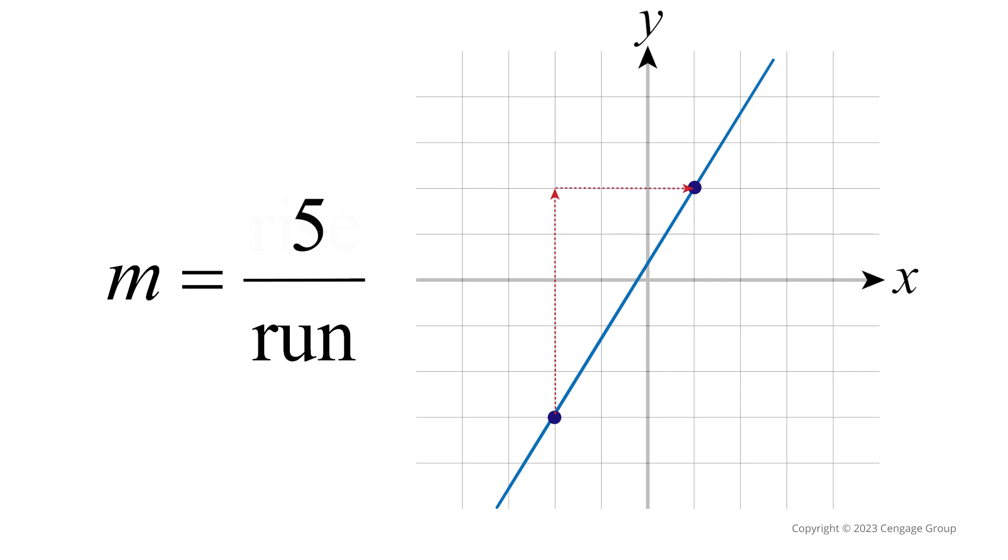After finding the rise, we can then find the change in the x direction, or the run. We always count the run from left to right in the positive direction. We count the number of spaces until we reach the second point. In this example, the run is positive 3.